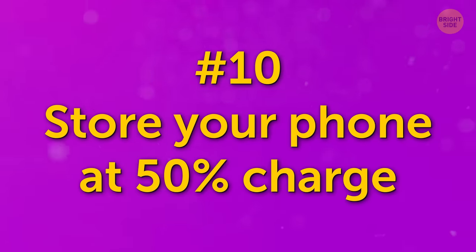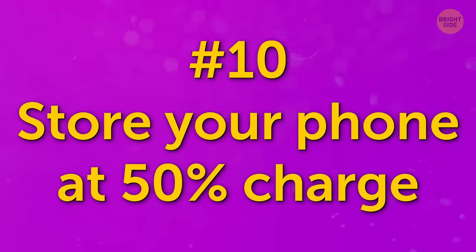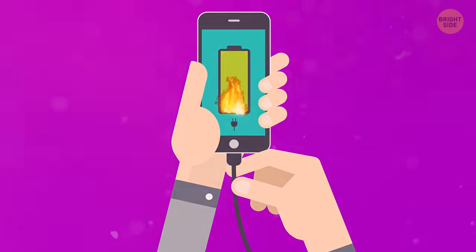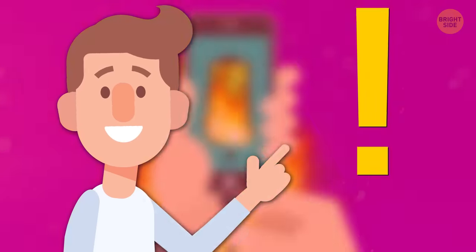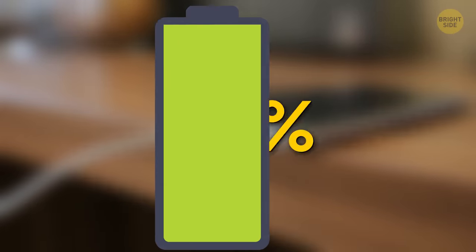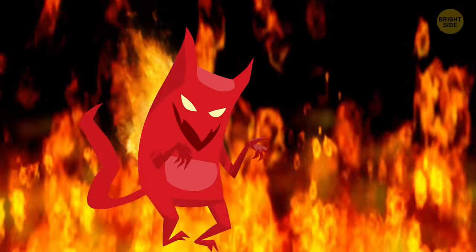Number 10. Store your phone at 50% charge. You'll often hear that charging your phone overnight can damage your battery, but this isn't exactly true. Modern devices will stop charging when the battery reaches 100%. The bad news is that storing a phone at 100% can wear the battery down over time.